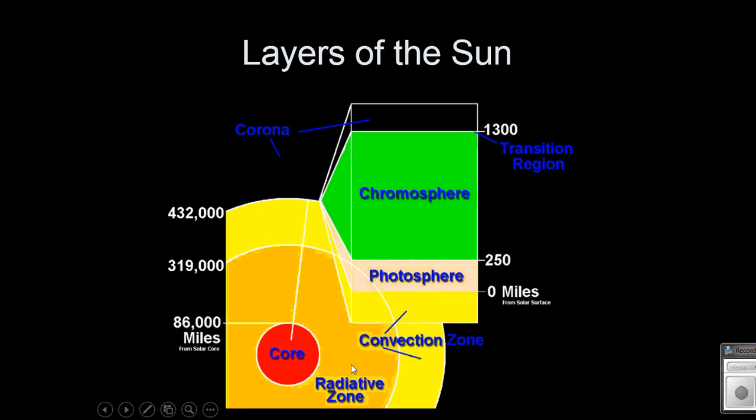So that convective zone, convection, once again, remember, is that movement of warmer to colder. So convection happens in the sun, just like it does in the water on the planet, in the atmosphere on the planet, and in the mantle on the planet.